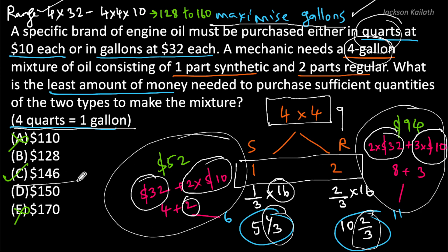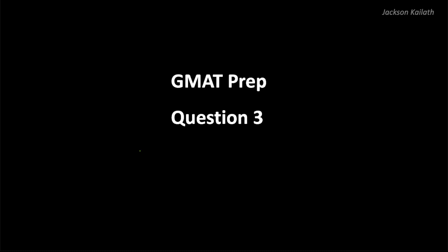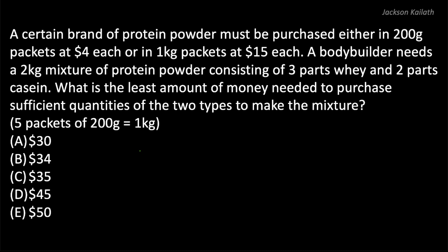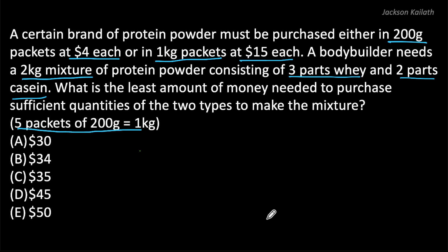To recap: we understood we needed to maximize gallons, found the range and eliminated options, then divided the quantity in quarts in the required ratio and maximized gallons. The answer is option C. You've now done two questions of the same type — let's look at one more. Question 3 is on screen; take two minutes and give it a try. The question says: a certain brand of protein powder must be purchased either in 200-gram packets at $4 each or in 1-kilogram packets at $15 each.